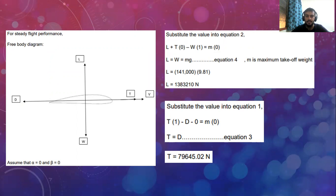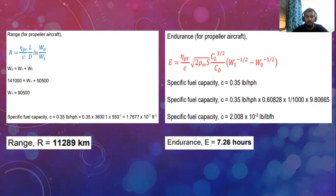Thrust is obtained with the calculation of CD and CL, and then find the drag polar first to find CD. This is the range for propeller aircraft. This is the formula given, and after you substitute all the values, the range is 11,289 km.